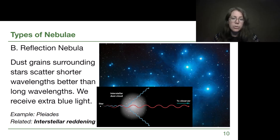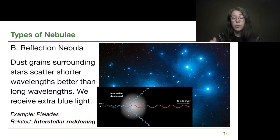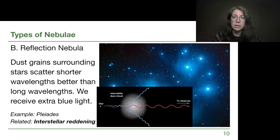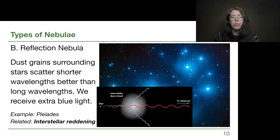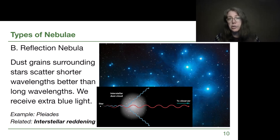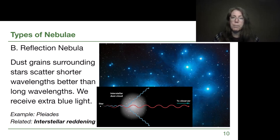When blue light is being scattered by a dust cloud, the red light continues in a straight line. This connects to the topic of interstellar reddening: if we are looking at stars behind a dust cloud, they will appear redder than they should — not because they are cold, but because we are losing blue light and keeping the red. So they appear redder in our images.